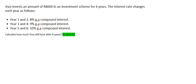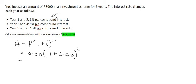So for the first two years, the interest rate will be 8%. So let's see how much Vusi will have after those two years. We know that it's compound interest, so we use the compound interest formula where the starting amount is 8,000 Rand. The interest rate is 8%, which is 0.08, and that's going to be for two years. And if you go work that out, you get a value of 9,331 Rand and 20 cents. So now that's how much he has after two years.